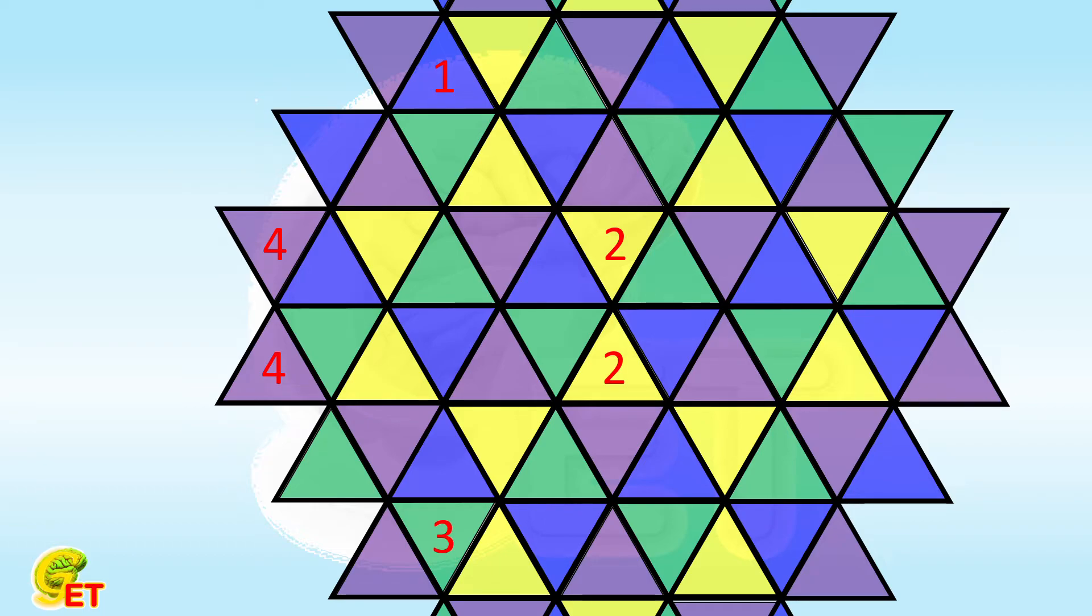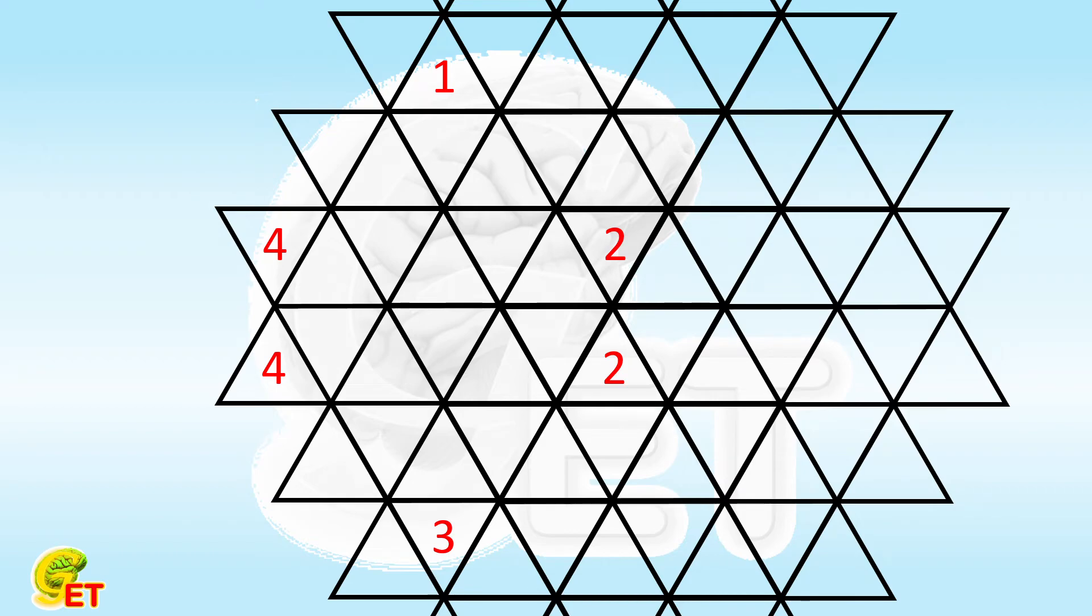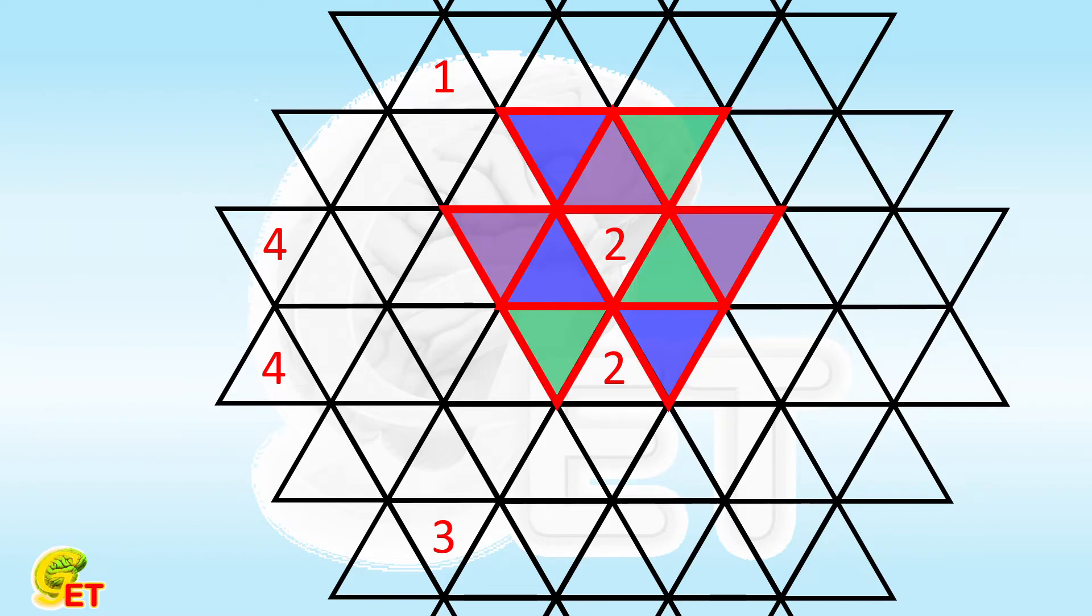Then let's go back to the previous question, what if it is still required that there cannot be duplicated numbers in the 4 small triangles connected to form a large triangle? We still first mark the triangles where the number 2 cannot appear. And then mark the 12 small triangles around it. Obviously,